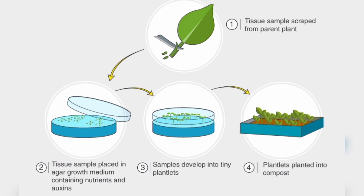Molecular farming is using plants specifically to produce pharmaceuticals like insulin and other products — essentially drugs that come directly from plants. Instead of going to the hospital for an insulin injection, you could just eat insulin corn. It's a wonderful concept, and all of these are key concepts in plant biotechnology.